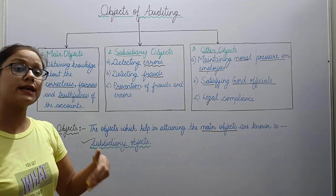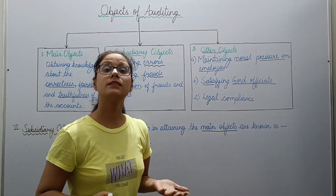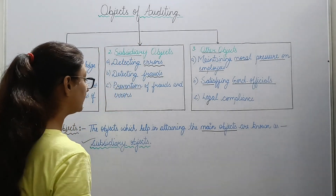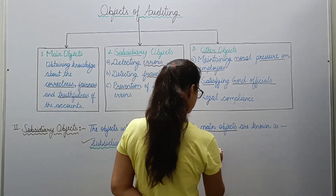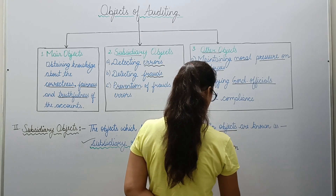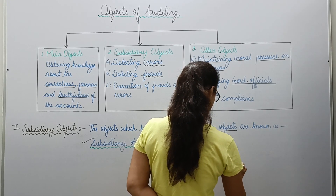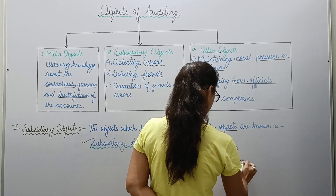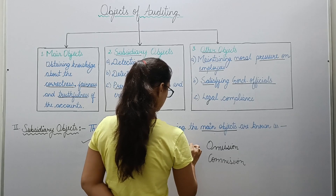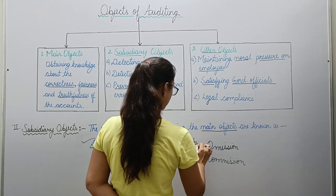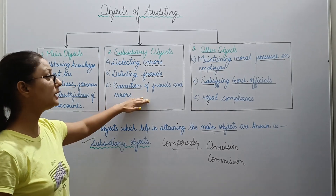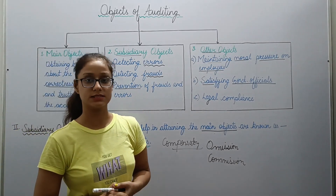Under detecting errors — how to detect errors and how many types of errors there are. Your errors include error of omission, error of commission, compensatory errors, and more. We will study all types of errors and how many types of frauds there are, and if you want to prevent them, how they can be prevented.